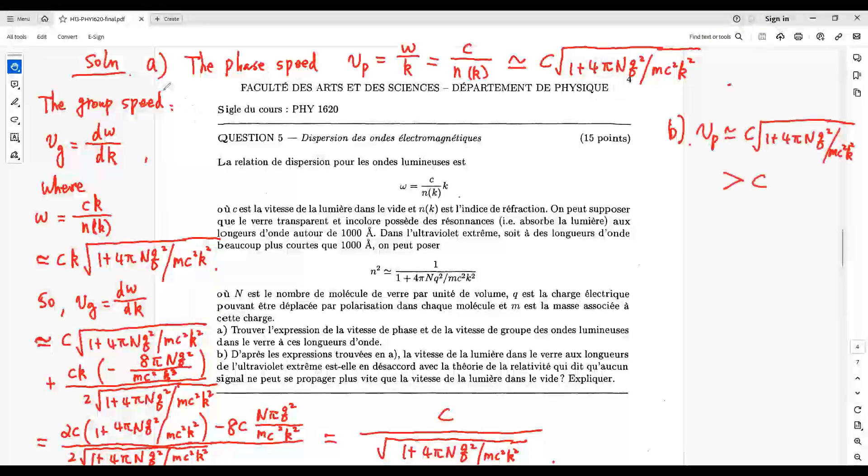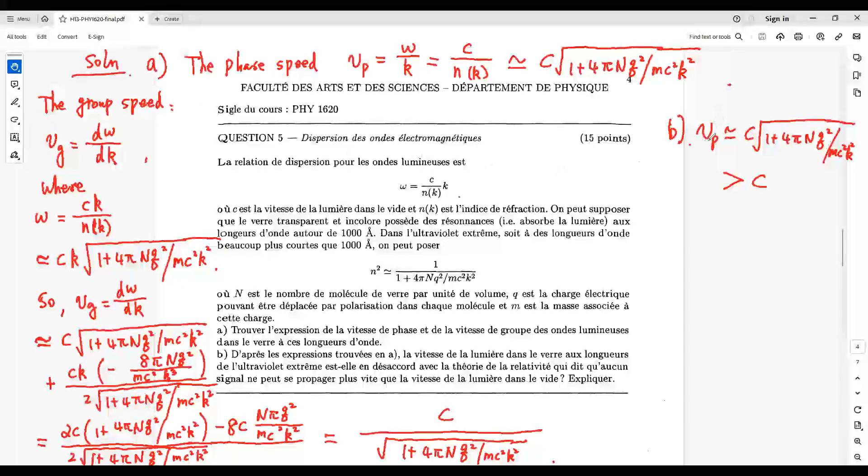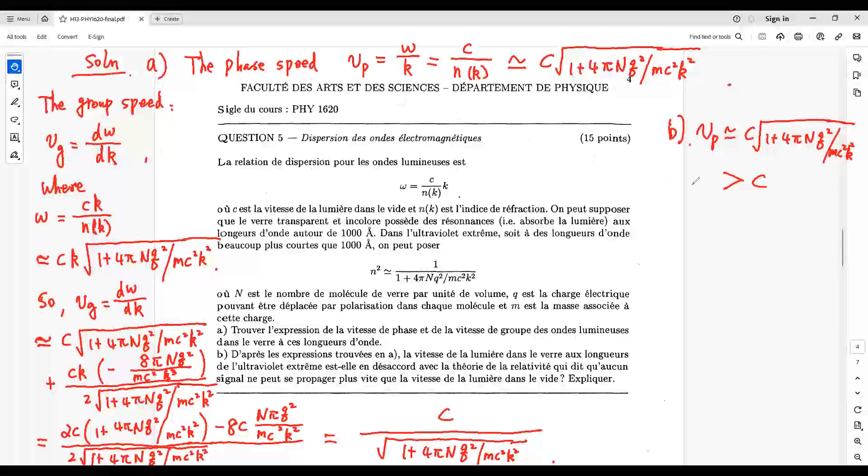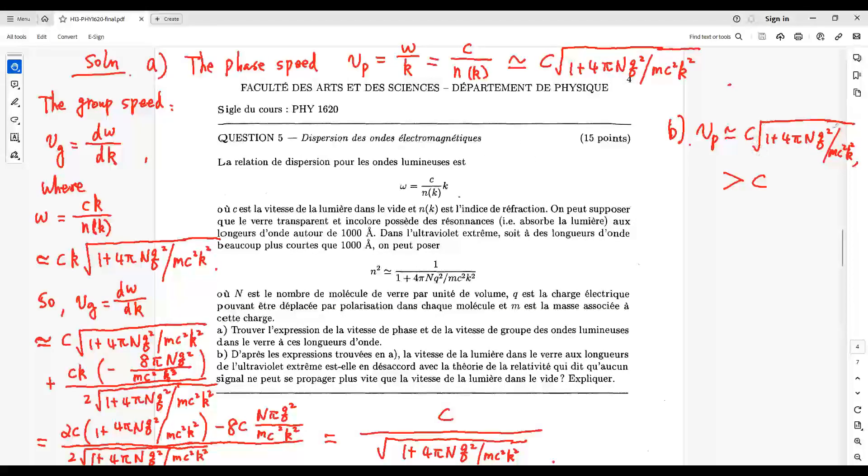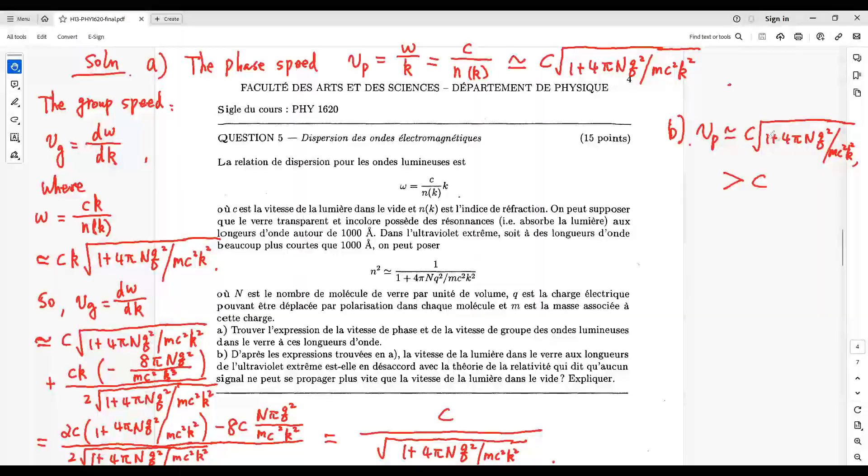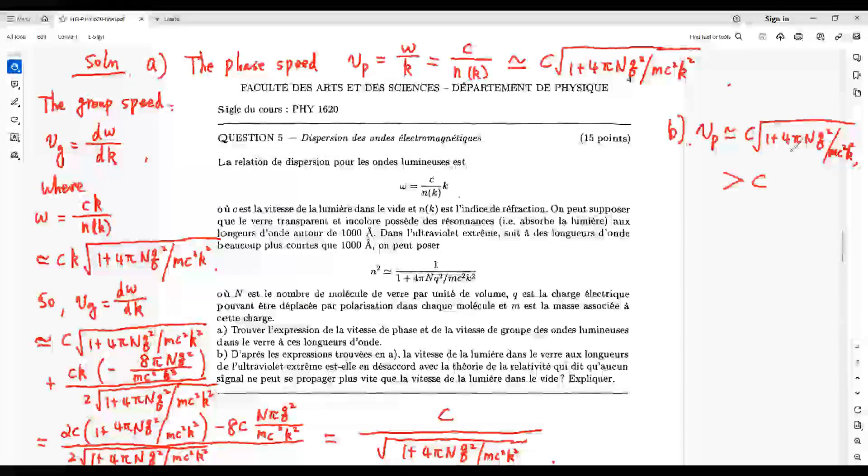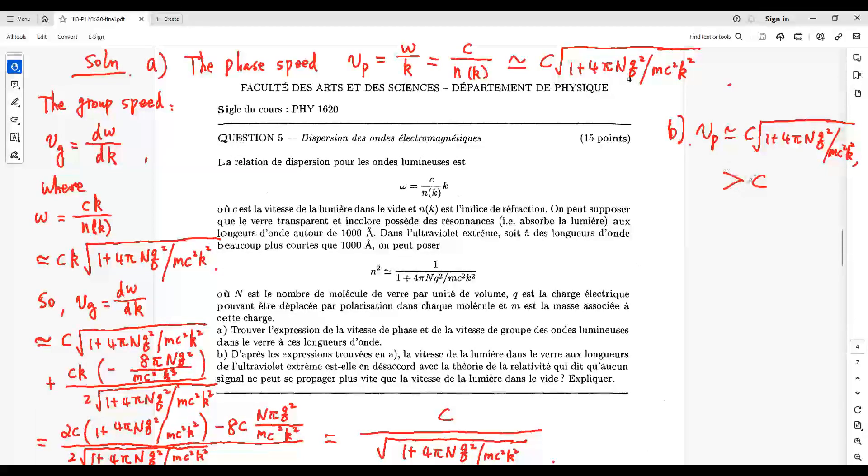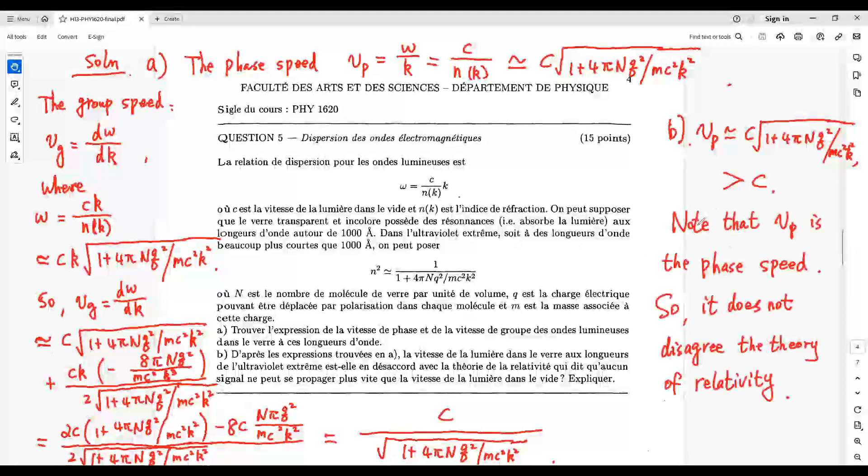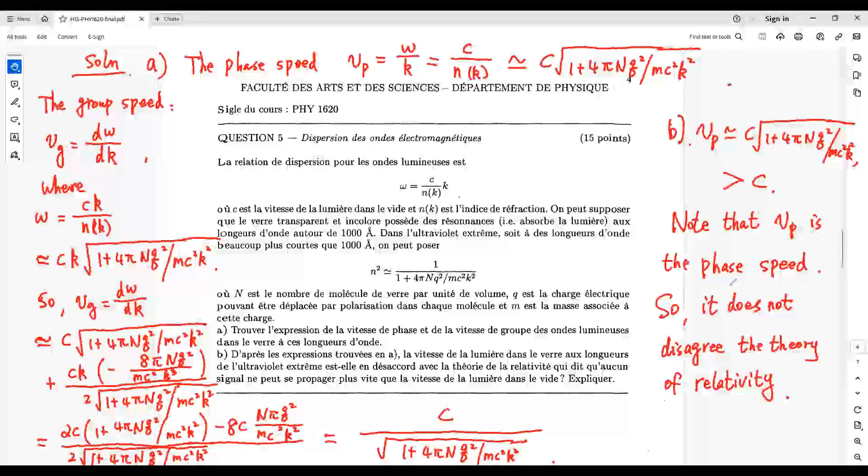Question B. By question A, we get Vp is given by this one. The square root inside this term is greater than one, because this is one plus some positive number. So, this square root is greater than one. Consequently, Vp is greater than the light speed C, where Vp is the phase speed.